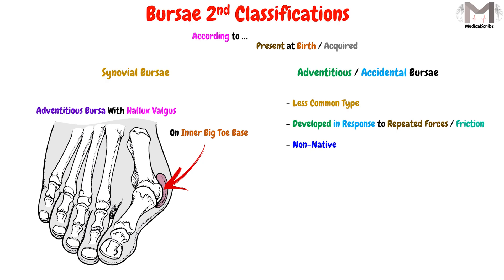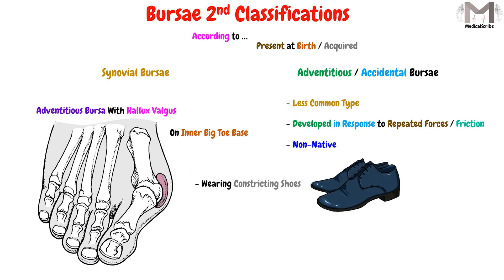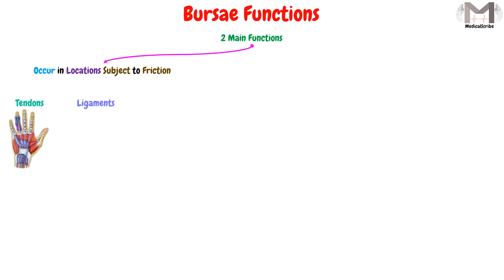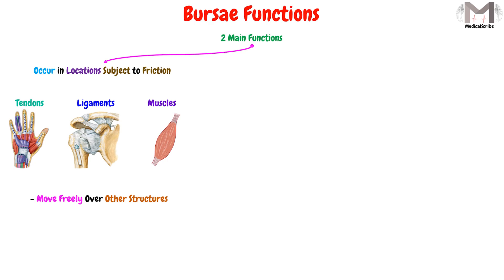This adventitious Bursae occurs due to regularly wearing constricting shoes or due to having an abnormal foot anatomy. So this is the second type of Bursae in the human body. The Bursae have two main functions. The first is that because they occur in locations subject to friction, these sacs enable different structures such as tendons, ligaments, and muscles to move more freely over other structures, reducing the friction that would otherwise occur between them. The second function is that Bursae may provide a role in shock absorption.